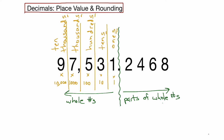Now when we think about place value on the other side — the right-hand side, the parts of whole numbers — we simply do the opposite. So we can think of this decimal separator as kind of like a mirror. Whatever we did on this side, we do the same on the other side, but in the opposite direction and opposite operation.